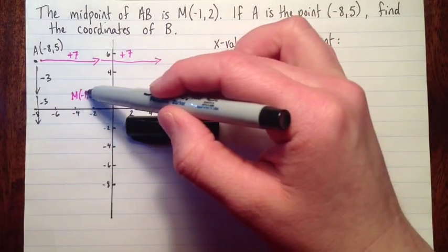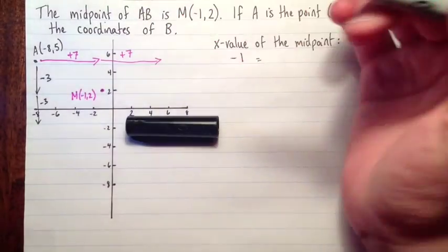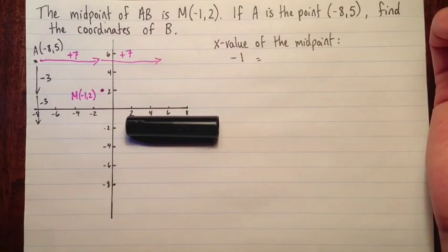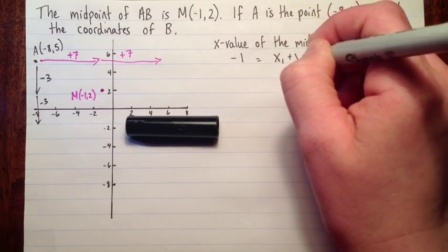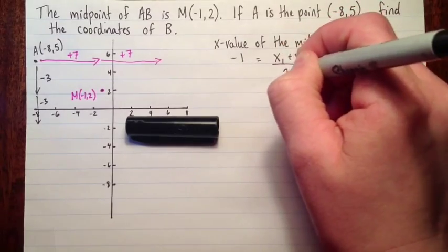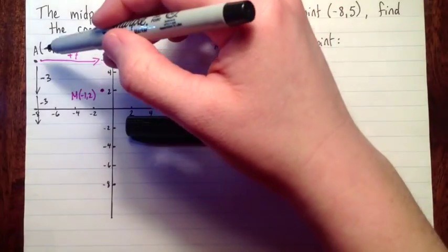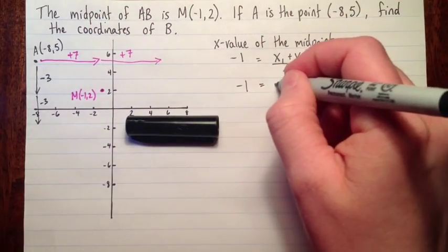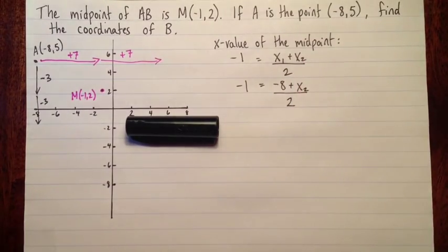So we know that the x value of the midpoint is negative 1. But we also know that that's x1 plus x2 divided by 2, the average of the x's. Let's write that down. x1 plus x2 divided by 2. Now I'll substitute what I know, which is x1. So it's negative 8 plus x2 divided by 2.